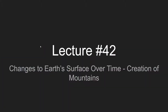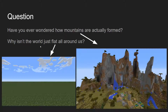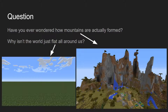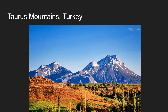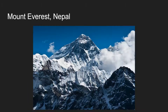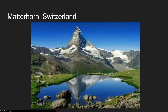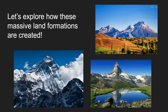Welcome to lecture 42 on changes to the Earth's surface over time. Today I want to talk about how mountains are formed. You might have thought about this already — this is a screenshot from Minecraft. Have you ever asked yourself how mountains are actually formed, and why wouldn't the world just be completely flat with no hills or mountains? For example, how did the Taurus Mountains in Turkey form? How did Mount Everest in Nepal form? How did the Matterhorn in Switzerland form? I want to explore how these massive land formations are created.